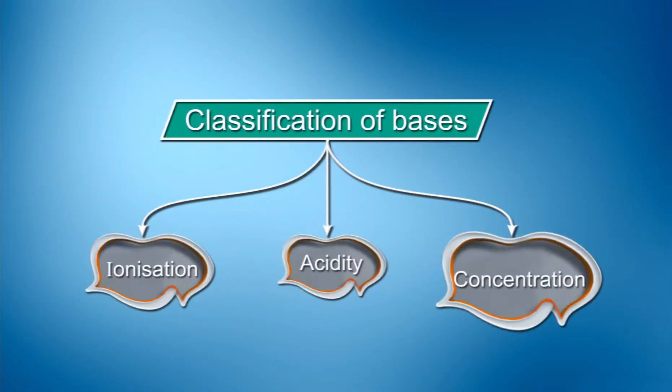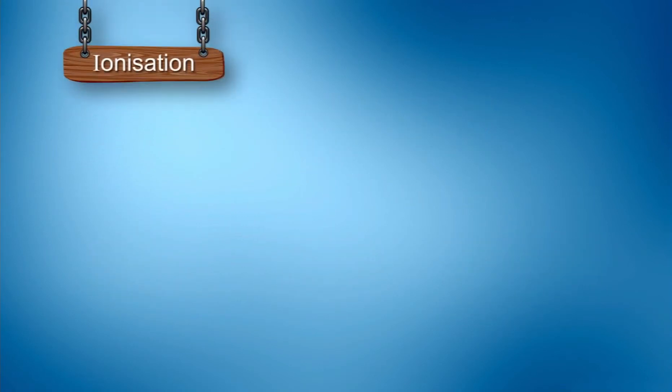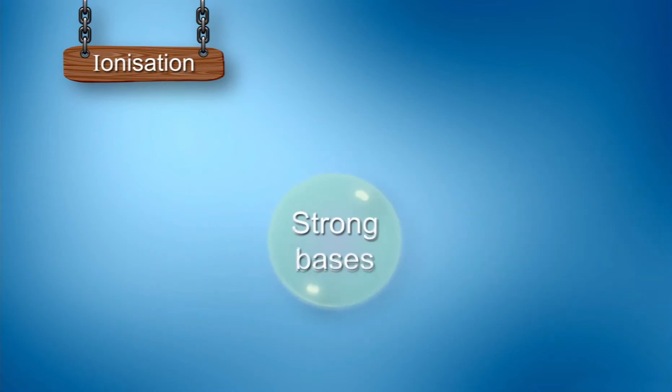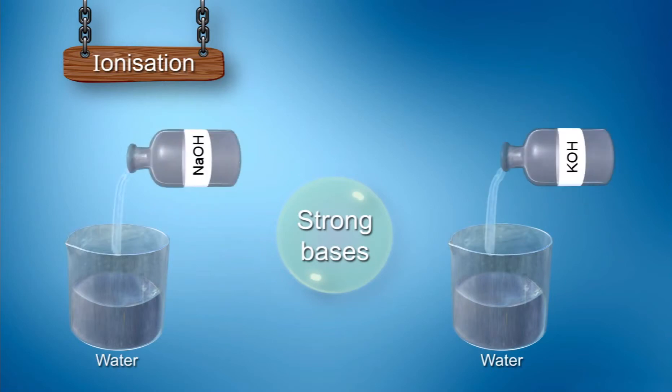Let's see how the bases are classified. Bases are classified based on ionization, acidity and concentration. Based on ionization, it is classified into strong bases and weak bases. Strong bases such as sodium hydroxide and potassium hydroxide are completely ionized in water.